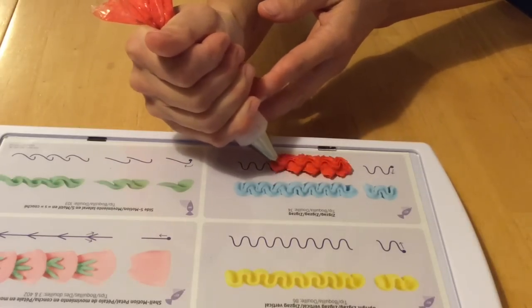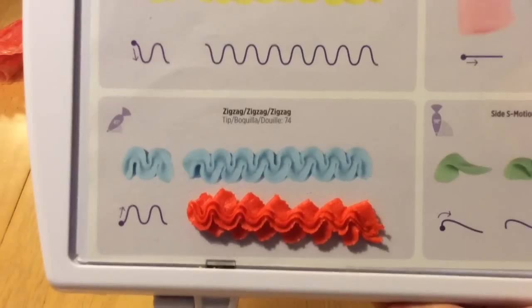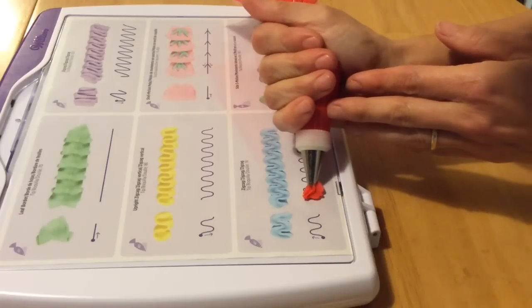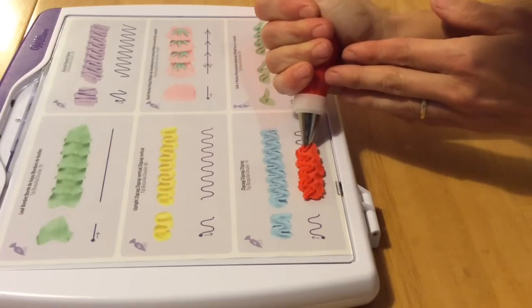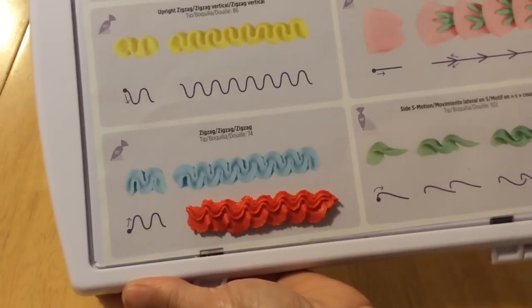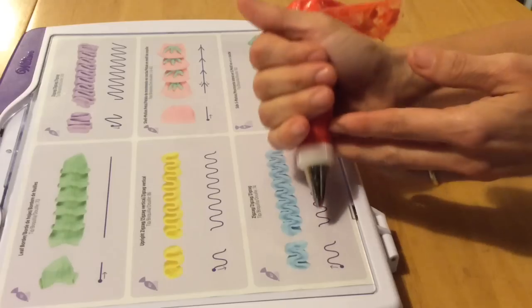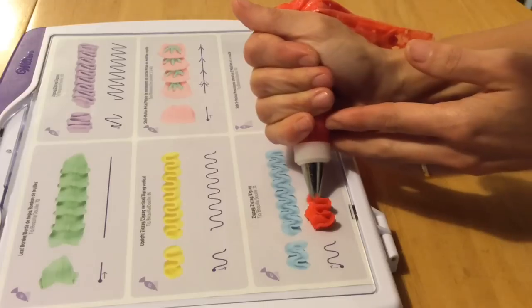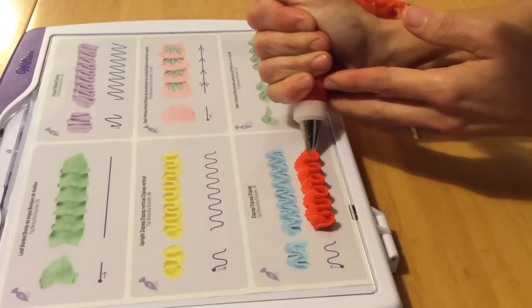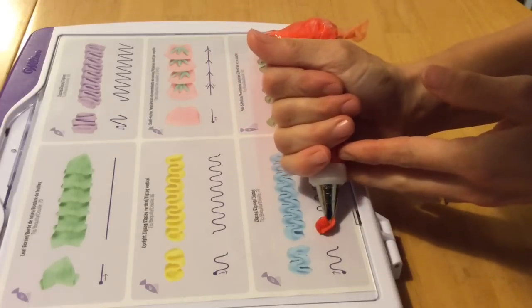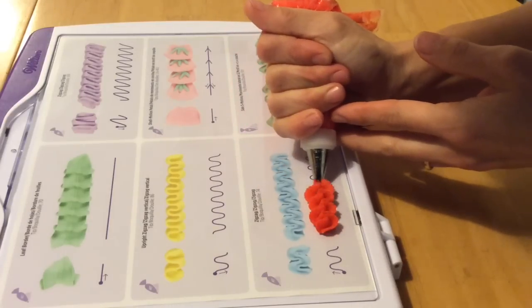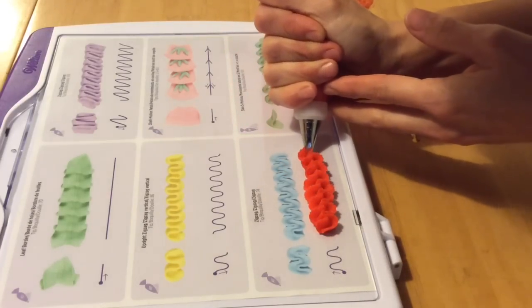Depending on which way you hold the tip, you'll get a slightly different ruffle effect. I think that's really cool. I like the variety. I do not have tip number 402 or tip number 100 that's required to make the other zigzag and large shell type effect techniques that are on here, so I apologize about that.